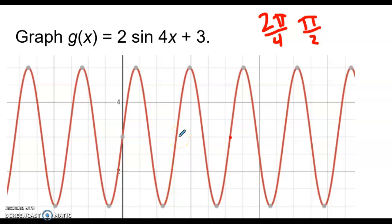π halves would be 3.14 divided by 2, which is 1 point something, which is that point right there. And then the 3, notice the midline typically is down here at 0, but now the midline has been shifted up to positive 3. So that's what the graph would look like.